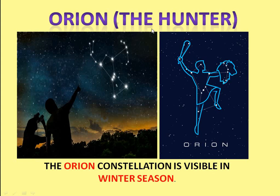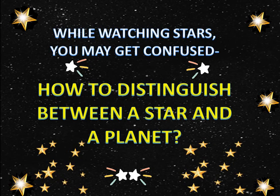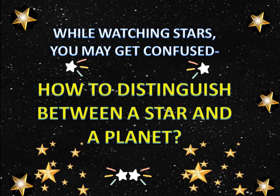Our next constellation is Orion, also called the Hunter. It is visible in the winter season. Three stars arranged in a line form the belt of the Hunter, and hence this is called the Orion constellation. Our next constellation is Cassiopeia, which looks like a W or an inverted M — resembling the shape of a lady sitting on a chair. This constellation is visible in the autumn season. So now you know the names of a few constellations and the seasons in which they can be seen.